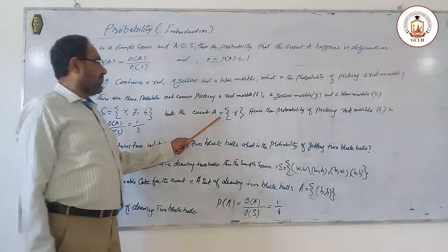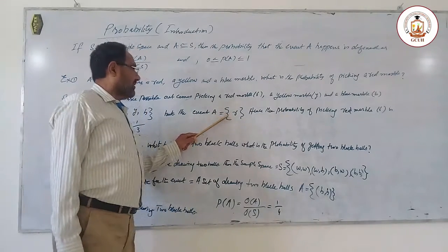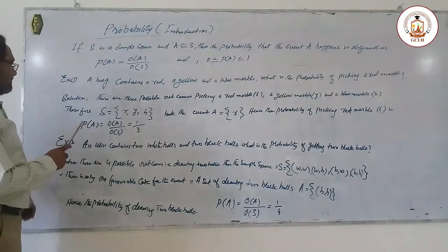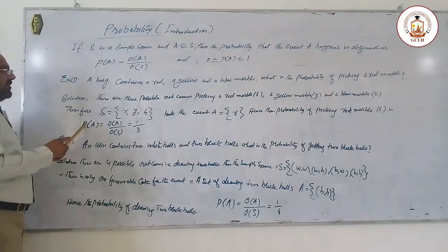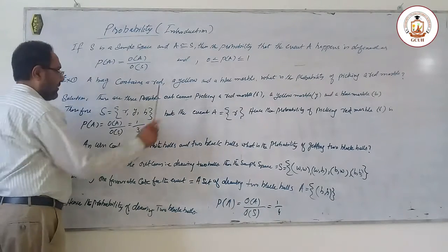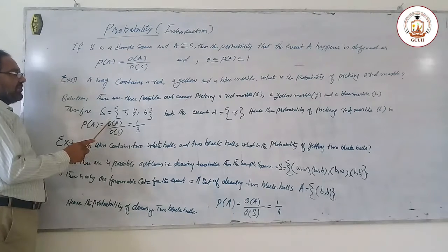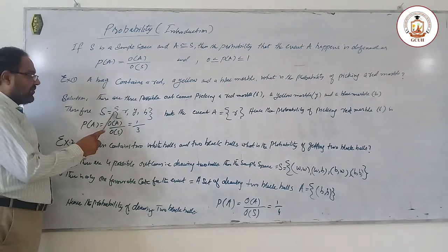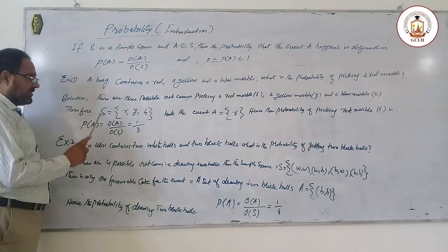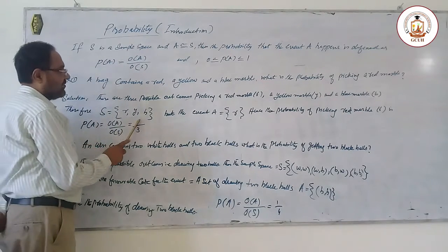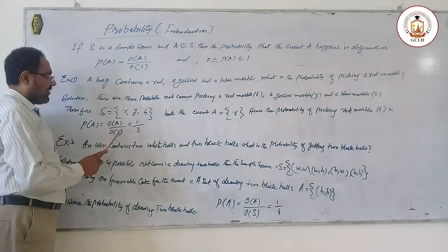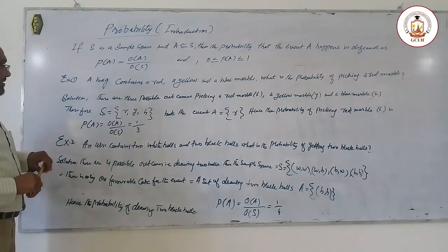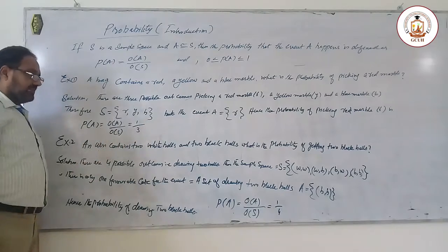The number of favorable outcomes for event A (picking a red box) is 1. So the probability of A equals the order of A divided by the order of S, which is 1 divided by 3. Hence, the probability of picking a red box is 1/3.